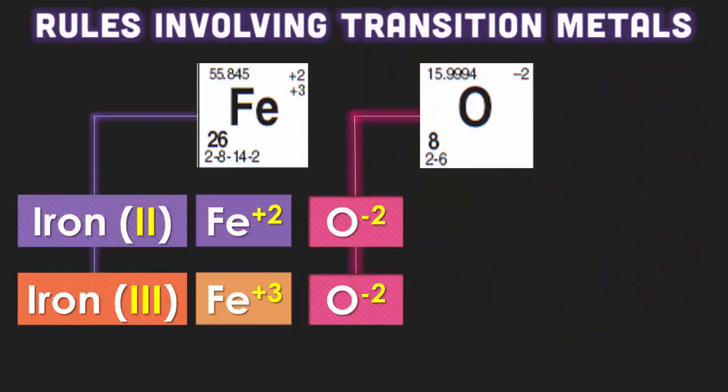Here's an example. Iron, as we see, has two different charges: iron two and iron three. Iron two has a Roman numeral two while iron three has a Roman numeral three. They're still being bonded up to oxygen which only has a negative two charge.